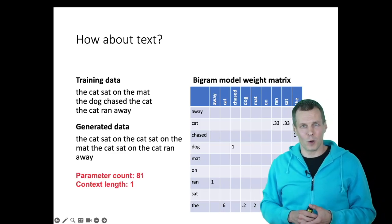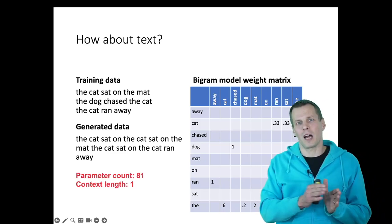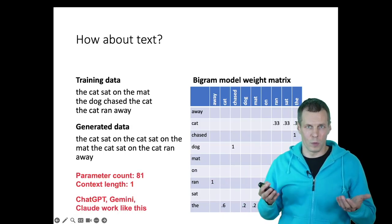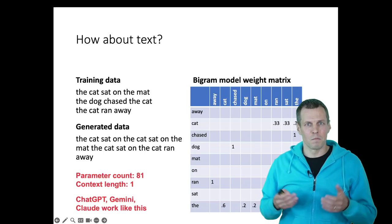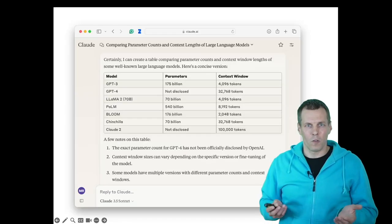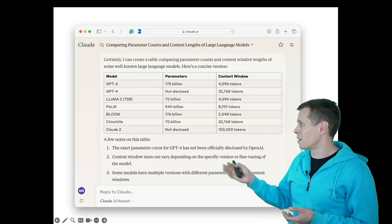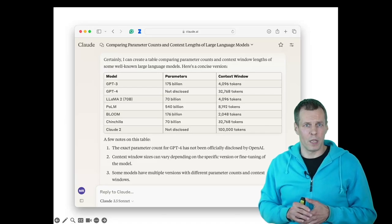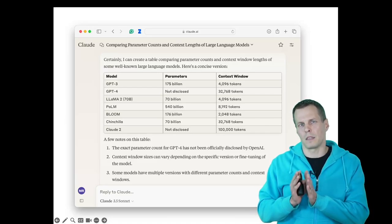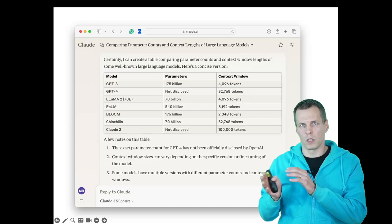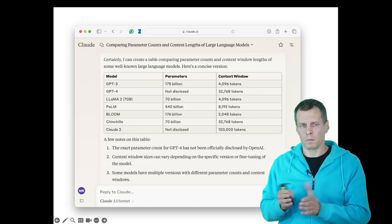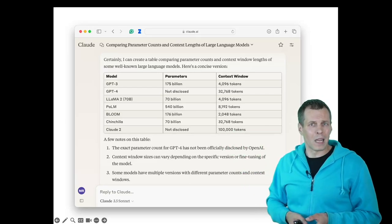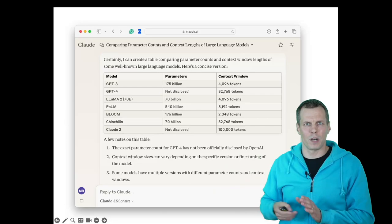This is how ChatGPT works. It looks at what I have written this far, what is the likely next word. ChatGPT, Claude, Gemini, they all work with the same principle. They are just a lot bigger. So instead of 81 parameters like we have here, these models are in the hundreds of billions, probably in the trillions of parameters. And the context length is not one word, but it is something called a token, which is like a word part or a letter combination. For example, Claude has 100,000 tokens. That's like multiple books that it looks at when it tries to predict the next word.